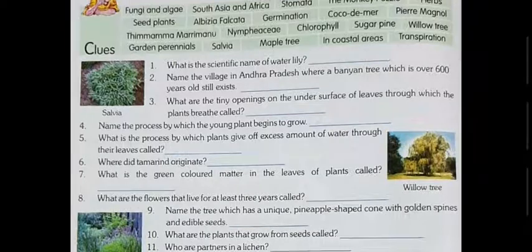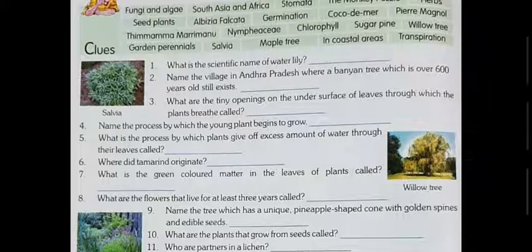The very first question: what is the scientific name of water lily? Everybody is aware of water lily — it grows in the pond. The scientific name of water lily is Nymphaeaceae — N-Y-M-P-H-E-A-C-E-A-E. I know the spelling is a bit difficult and big, but no need to worry.